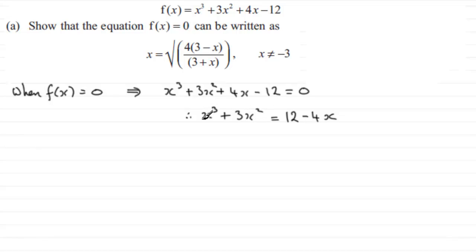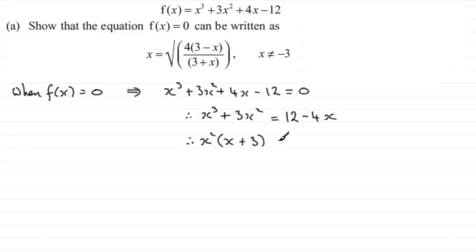I can also see that (3 plus x) appears in here. If I pull out x squared as a common factor on the left, I'm going to get x squared times (x plus 3). And pulling out 4 as a common factor on the right, I'm going to get 4 times (3 minus x). So both sides are now factorized.